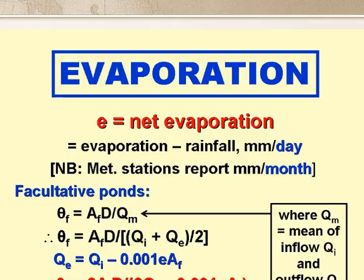Net evaporation is evaporation minus rainfall, both expressed in millimetres per day. The equations on the slide basically say that the retention time, θf, is the volume divided by the flow, with the volume written as area times depth. But the flow is the mean flow, the mean of the inflow and the outflow, and the outflow is the inflow minus the losses due to evaporation, which are 0.001 times E, the net evaporation in millimetres per day, times the facultative pond area in square metres.